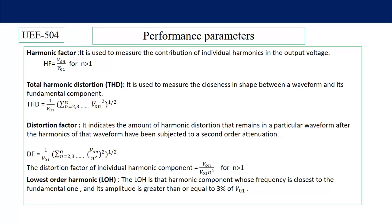The distortion factor of individual harmonics can also be found as V_0N divided by (V_01 times N squared), for N greater than 1. Then, lowest order harmonic (LOH) is the harmonic component whose frequency is closest to the fundamental and whose amplitude is greater than or equal to 3% of the fundamental. If the harmonic magnitude is less than 3%, we can assume our output waveform is close to the fundamental. All these factors are very important to decide the quality of the output waveform.